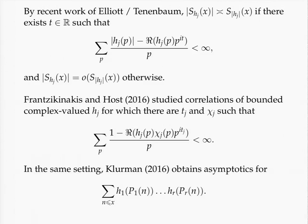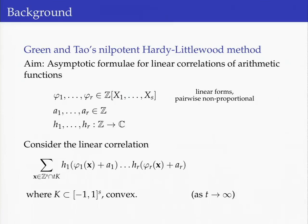This much about the statement of the result. In the remaining time of this talk, I want to say a bit about the proof. The proof of the main result is based on the methods that Green and Tao developed in their work on primes. In particular, these methods allow you to produce asymptotic formulae for this kind of linear correlations — a finite set of linear forms in at least two variables, a set of constants and arithmetic functions — provided the functions h_1 up to h_r satisfy two conditions.